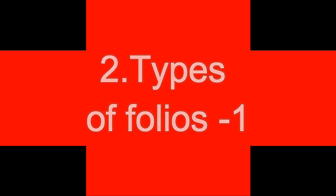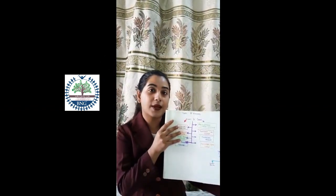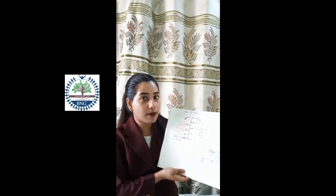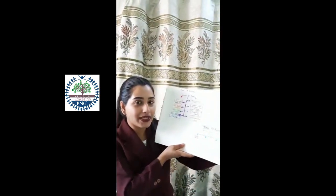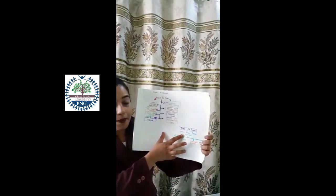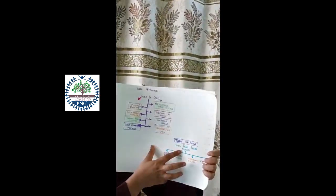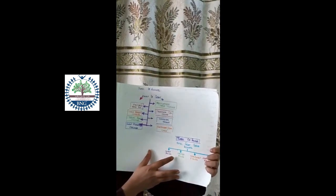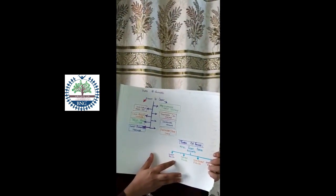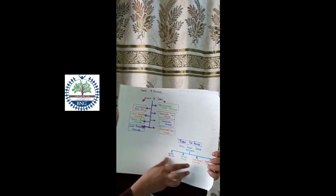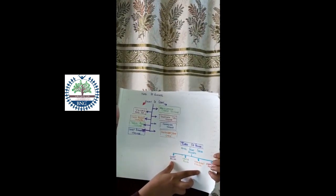We now start and discuss the types of folios. The types of folios are divided under hotel front office accounts, which includes guest folios, master folios, non-guest account folios, and employee folios.